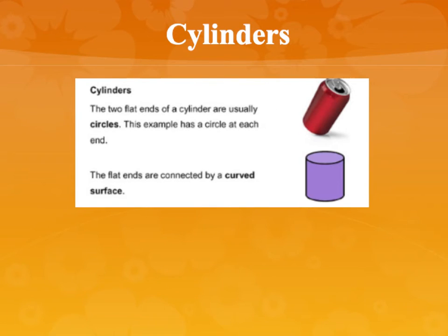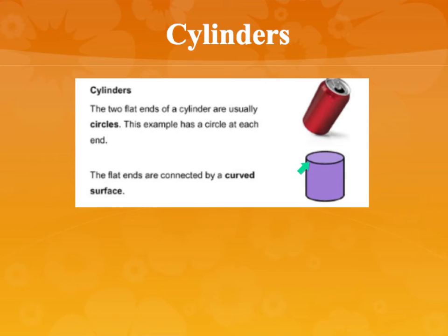Next up we have cylinders. Cylinders have two flat ends on the top and the bottom, and these two ends are usually circles — kind of like a Coke can. The flat ends are connected by a curved surface. So this isn't a straight corner where the ends meet; it's not going to be a vertex because it is a curved corner. It goes all the way around the circle.